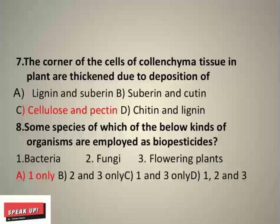A 13-chamber heart occurs in the cockroach. Next, the corners of the cells of collenchyma tissue in plants are thickened due to the deposition of which substances? The options are: lignin and suberin, suberin and cutin, cellulose and pectin, or chitin and lignin. The correct answer is cellulose and pectin. This is an important MCQ for your zoology paper and biology paper.